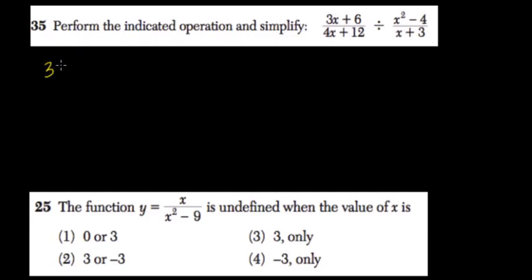So 3x plus 6 has a common factor of 3. 3 times x plus 2 is 3x plus 6 over 4 times x plus 3, because 4 times x is 4x and 4 times 3 is 12.